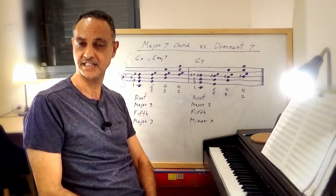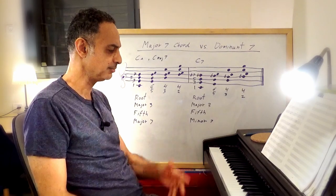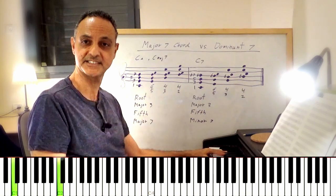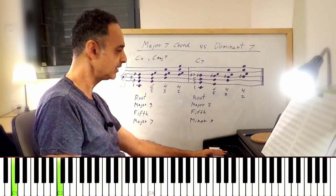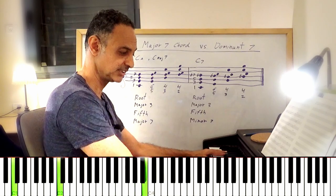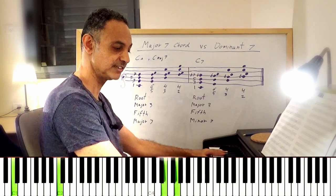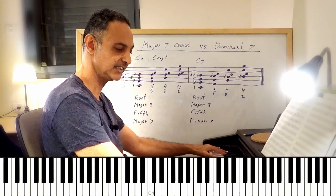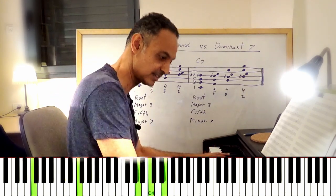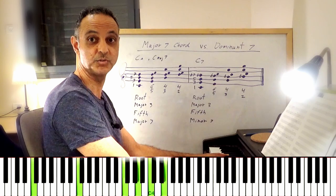How can we practice these chords? The first thing you could do is play the root with your left hand — for example, let's go back to C major 7 — and then go through all the inversions with your right hand: root position, 1st inversion, 2nd inversion, 3rd, and root up — ascending and descending. Then go to F major 7 and do the same thing, then to G7.